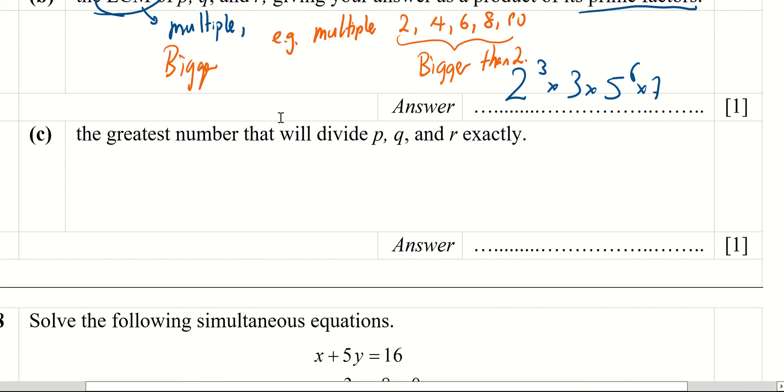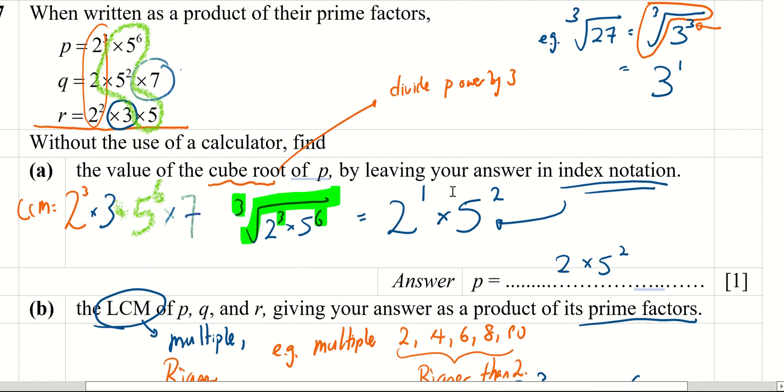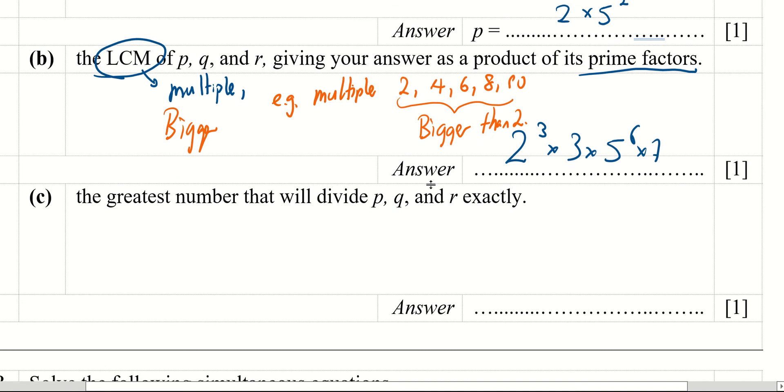Now HCF, or greatest number that will divide p, q, and r exactly. So there is a number that will divide this number. Let's say, for example, I got a number that will divide 27 and 9 and 12 exactly. When I say a number divides this number, it is 27 divided by the number, so this number is smaller than 27.